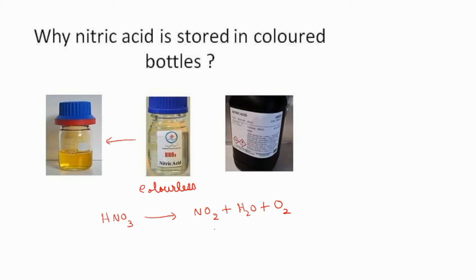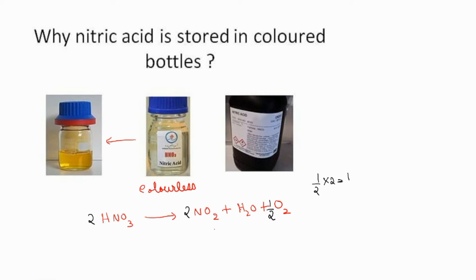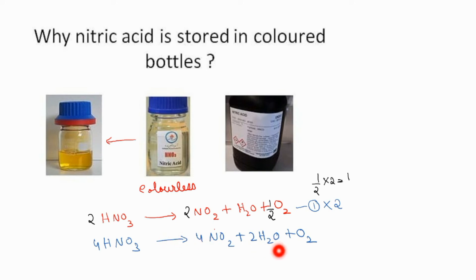To balance the decomposition equation: first correct hydrogen — there are 2, so put a 2 giving 2HNO3, which makes nitrogen 2 on both sides. Count oxygen on the left: 6. On the right it becomes 7, so place a half in front of O2 — half × 2 = 1 oxygen atom, making the right side 6 as well. Since fractions are not used in balanced equations, multiply the entire equation by 2: 4HNO3 → 4NO2 + 2H2O + O2. You can simply memorize this balanced equation.